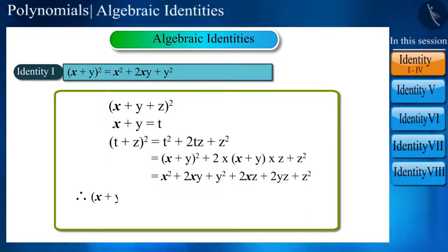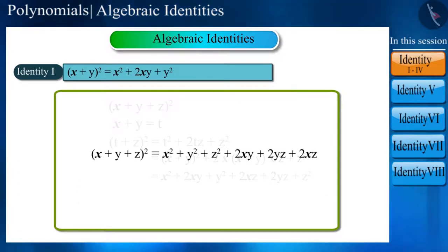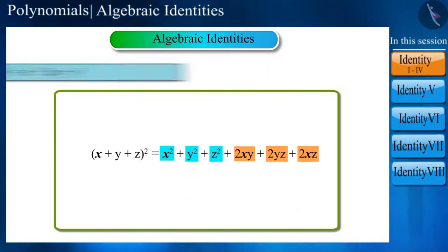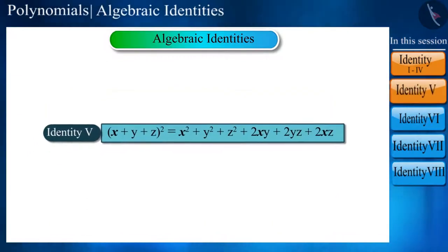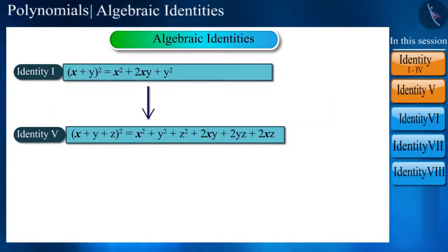Then you will get (x + y + z)² = x² + y² + z² + 2xy + 2yz + 2xz. We can remember it like this: in the square of a trinomial, there are three squares and three factors. This is called Identity 5.